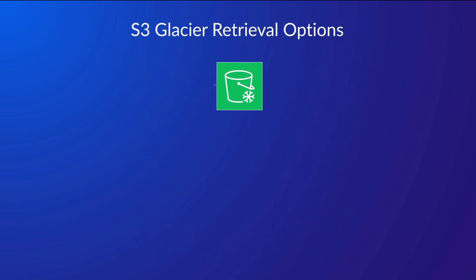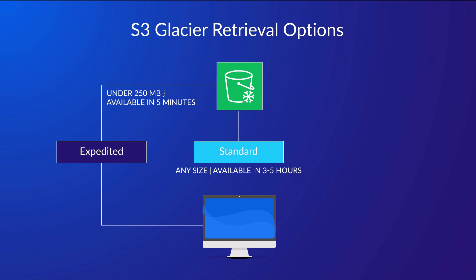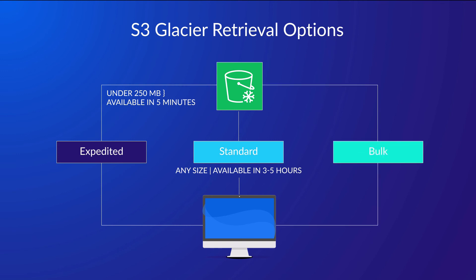Expedited retrieval is used when you have an urgent requirement to retrieve your data, but the request has to be less than 250MB. The data is then made available in 1-5 minutes, and this is the most expensive retrieval option. Standard retrieval can be used for any archive regardless of size, but your data will be available in 3-5 hours — the second most expensive option. Bulk retrieval is used to retrieve petabytes of data at a time, typically taking between 5-12 hours to complete, and is the cheapest of the three retrieval options.